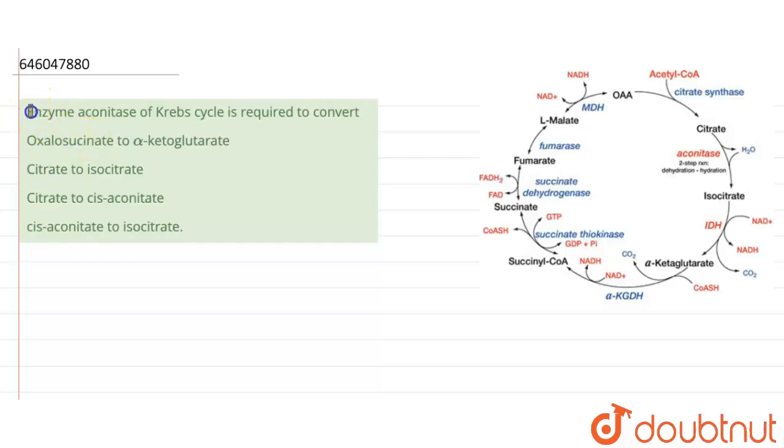Hello everyone, let's solve the question. Enzyme aconitase of Krebs cycle is required to convert.